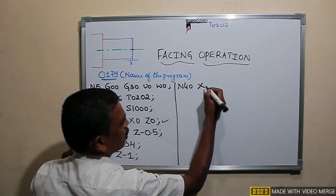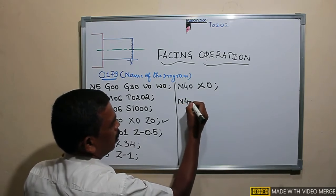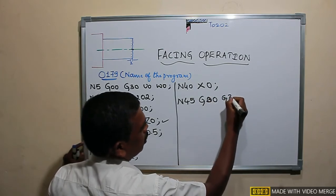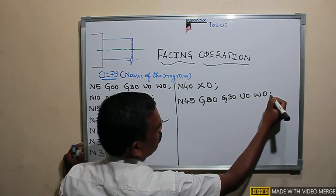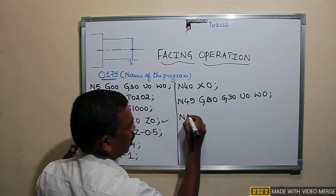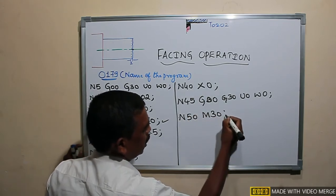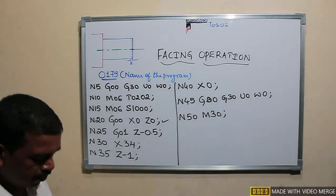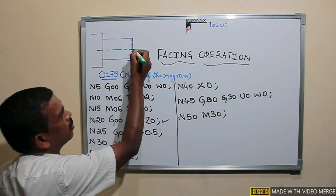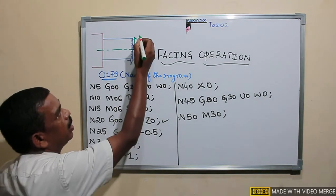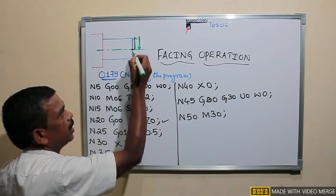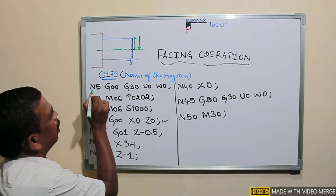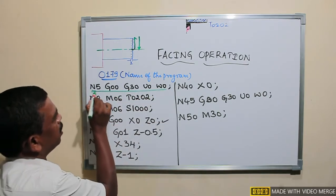Then I will move the tool back to the center. After that I will send the tool to its home position with G00 G30 U0 W0, and then end this program with M30 — that is program end and rewind. For facing, there are two methods: we can move the tool from center to periphery, or from periphery to center.